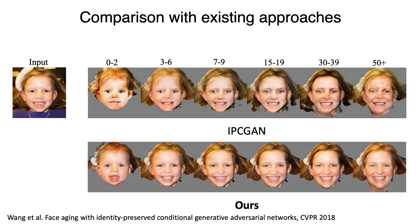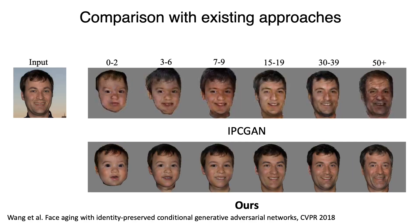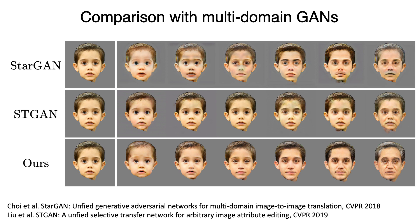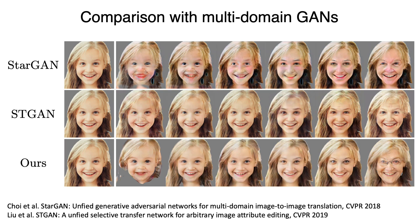Existing aging algorithms focus on aging of adults, as they mostly change facial texture. In comparison, our approach can transform both facial shape and texture, which is required for age transformation from babies to elderly. We also compare against state-of-the-art multi-domain GANs. Once again, we can see that these methods focus on texture with minimal shape change.